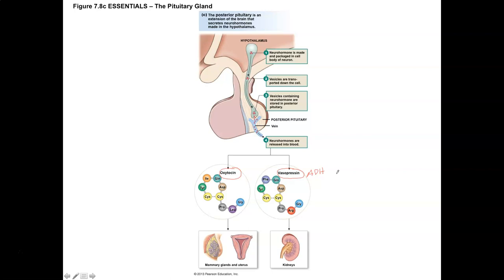Let's start with oxytocin. Oxytocin comes from a nucleus in the hypothalamus — a nucleus being a collection of cell bodies in the central nervous system. Neurons in this nucleus create oxytocin and send it down into the neurohypophysis, or posterior pituitary, to be released into the bloodstream. This nucleus is called the paraventricular nucleus, and it produces oxytocin.